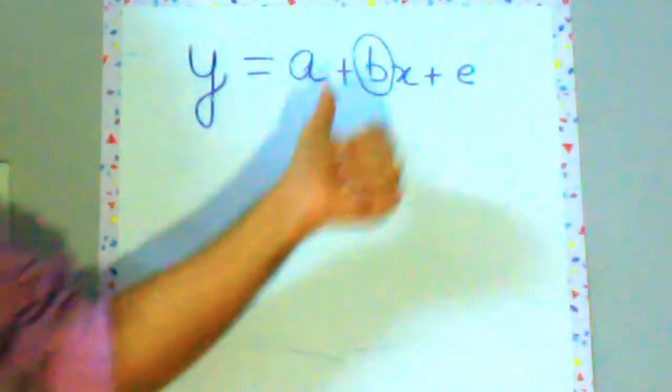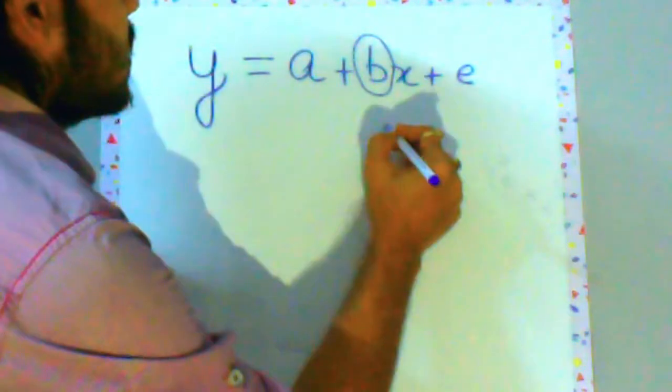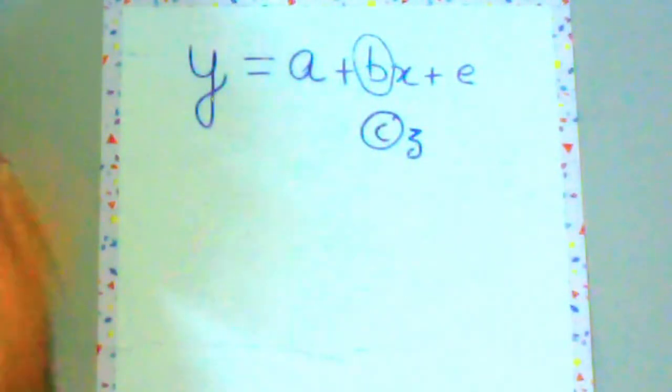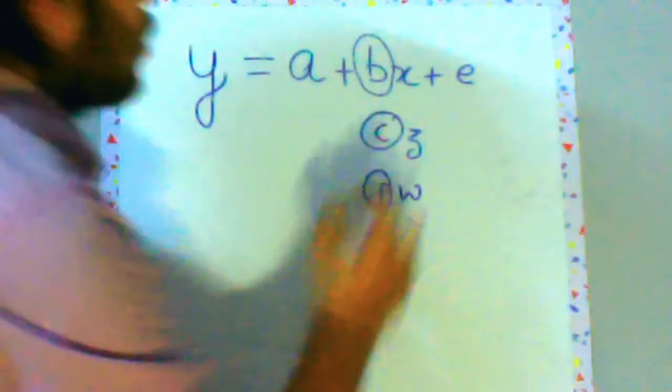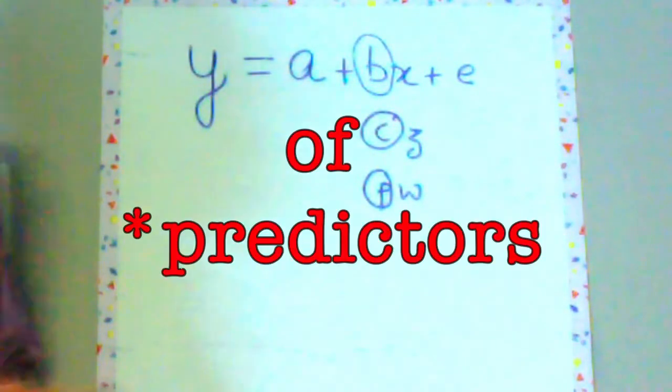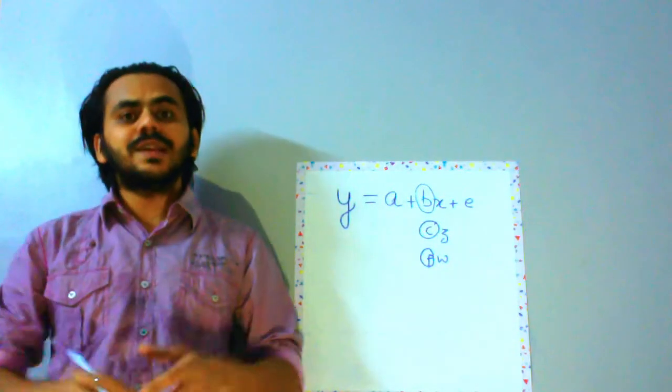So you have to estimate a and b in this case. Once you add another predictor you have to estimate a, b and c if you have c, z and if you have another predictor let's say some p, w so you have to estimate p also. So you have to keep on estimating the coefficient of the parameters and all the calculation will be separate for all of them. So it's not really scalable.